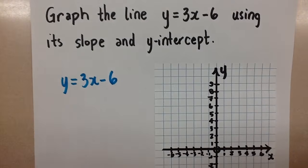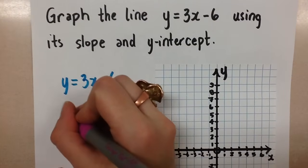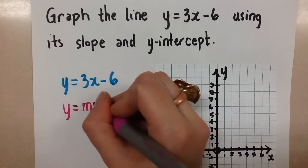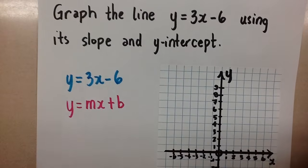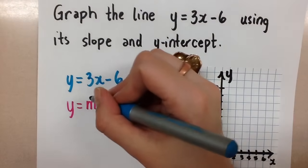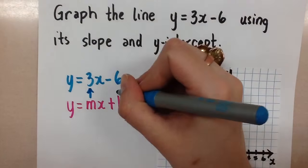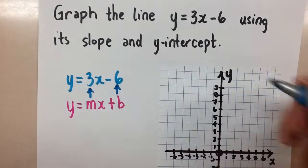This is in slope y-intercept form. If you remember, y = mx + b is the form of the equation. So the slope is positive 3, and the y-intercept is negative 6.